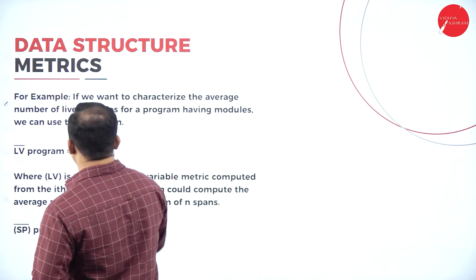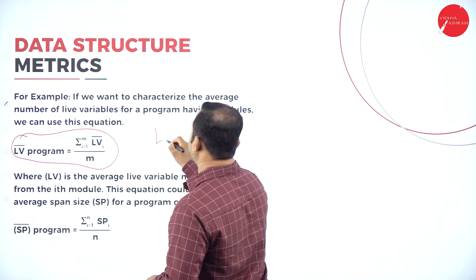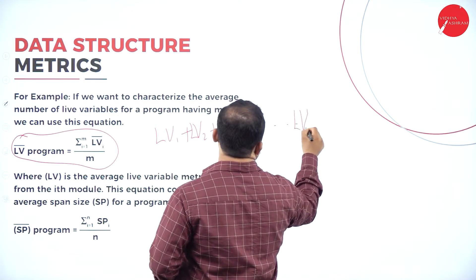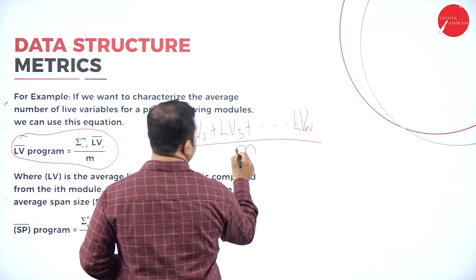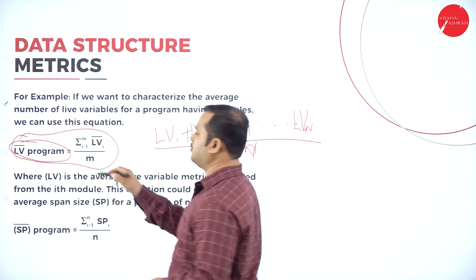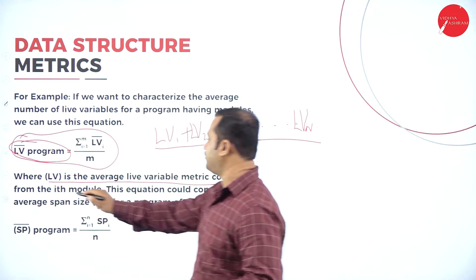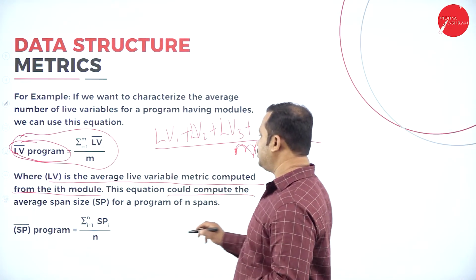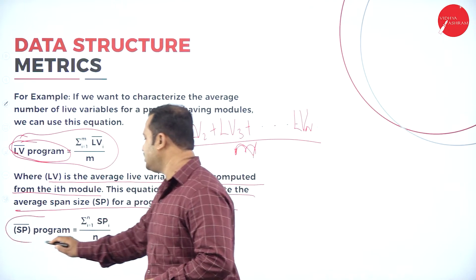Similarly, the live variable program formula is calculated as: LV(program) = summation from i=1 to m of LV(i), where LV(1) + LV(2) + ... + LV(n) is divided by m. This gives the average live variables across modules. We also have one more formula — the span size of a program — which is the mean of span size values: (span_size(1) + span_size(2) + ... + span_size(n)) / n.